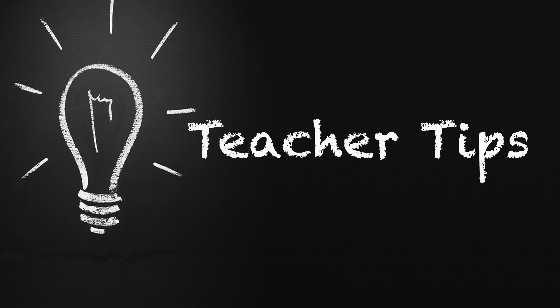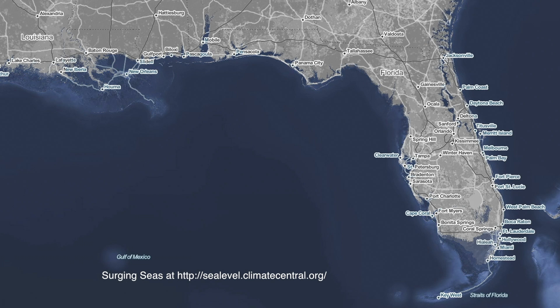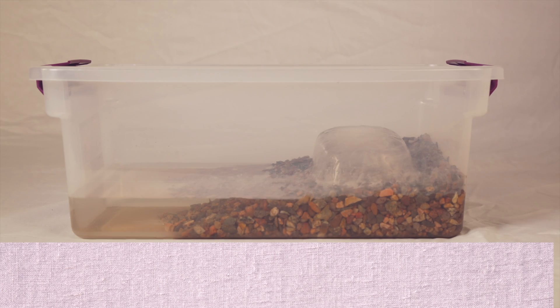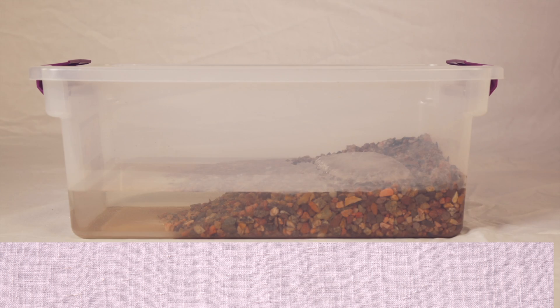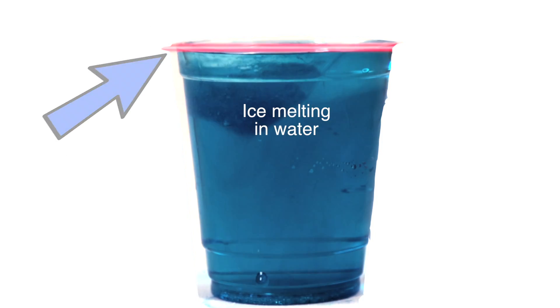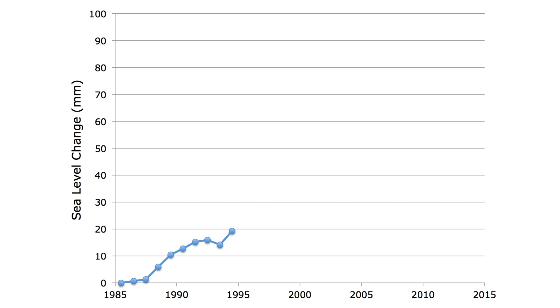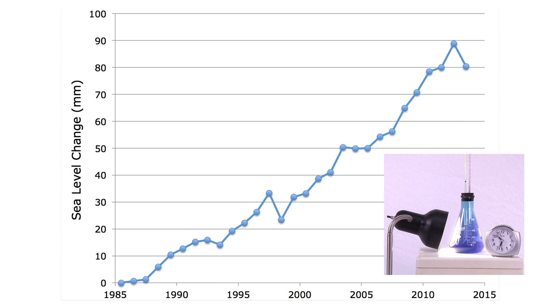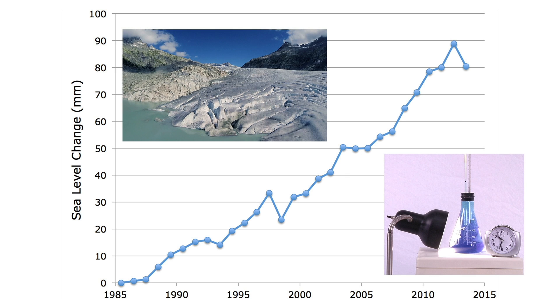Here are a few more teaching tips about points to emphasize when using this activity. As noted earlier, there are two major causes of sea level rise. One, which we demonstrated here, is thermal expansion of seawater. The second is melting of ice on land, which flows into the sea as water. When floating ice melts, it does not directly cause any sea level rise. Scientists estimate that global sea level has risen by 9 centimeters, or about 3½ inches, during the past 30 years. Thermal expansion of seawater and melting of grounded ice each contribute about equally to sea level rise.